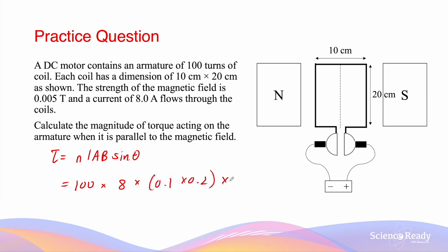This is then multiplied by the magnetic field strength of 0.005 Teslas, and by sin 90 degrees. This gives a total torque of 0.08 Nm.